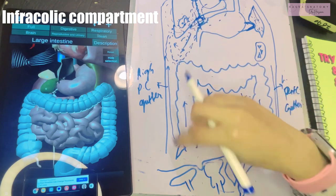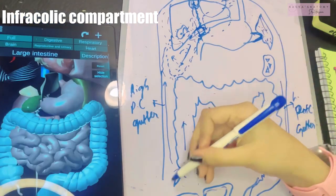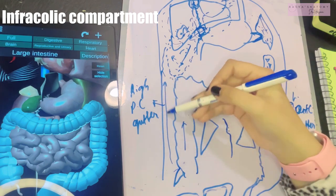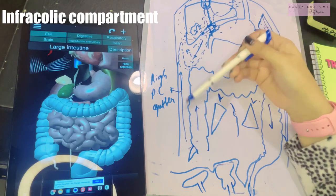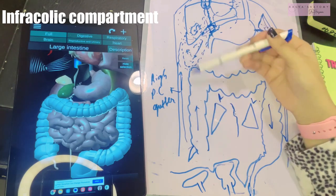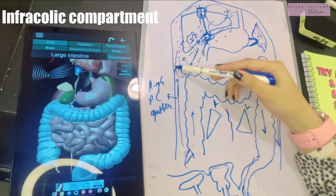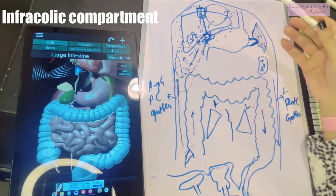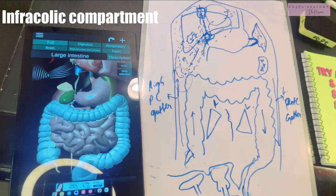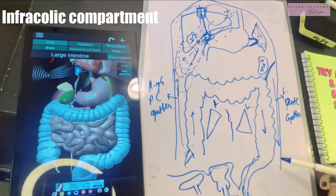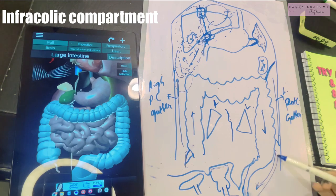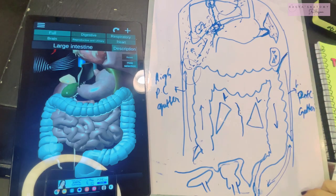Lateral to both the colons are very important areas known as the right and left paracolic gutters. These gutters also play a role in the spread of infection. In appendicitis, infection goes into the right paracolic gutter, and infections from the lesser sac or gallbladder can also reach the right paracolic gutter through its connection with Morrison's pouch. On the left, the phrenicocolic ligament largely blocks the upper part, but infection can spread downward to the pelvic cavity, or pelvic infections can ascend to the left paracolic gutter.